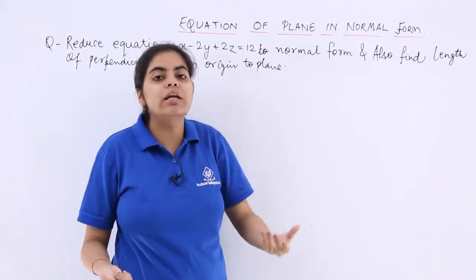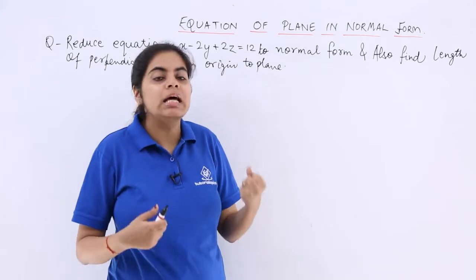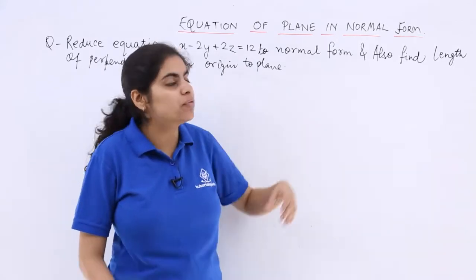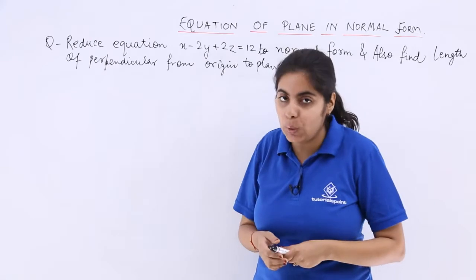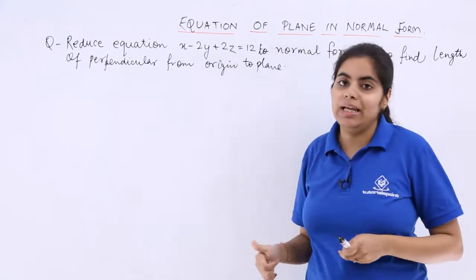So the first part is you have to reduce the given equation to the normal form, and the next part says also find the length of the perpendicular from the origin to the plane.